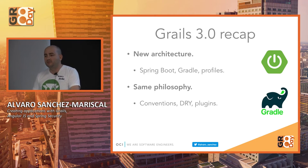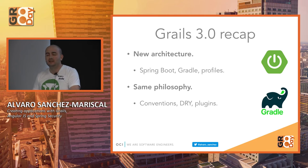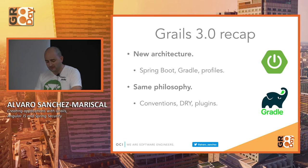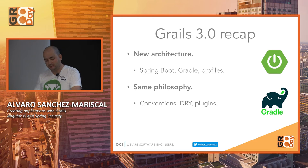A quick recap of what changed in Grails 3.0. If you used Grails 2.0, you probably know it was based on Spring MVC. We changed that for Grails 3.0 — it's now based on Spring Boot. It brings Gradle as the build tool instead of a custom Gant build system, and it introduces profiles, which I'll explain later. Apart from that, everything is the same as Grails 2.0 — the same conventions, the plugin ecosystem, everything works like before.